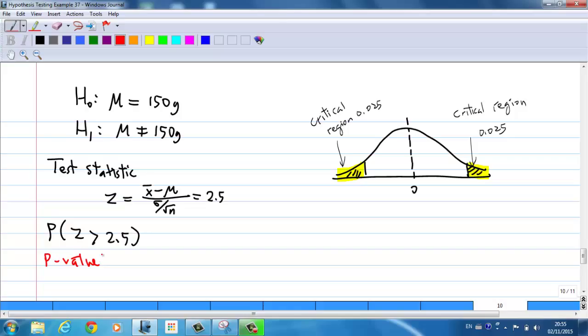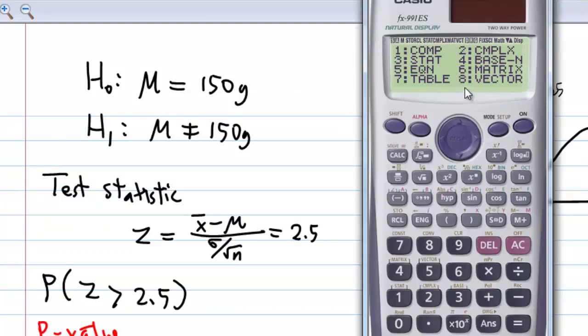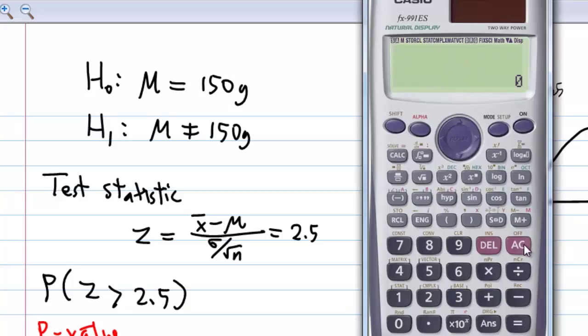In this case, the calculator function is r. Set the calculator mode to statistic, which is 3. Then press AC to get out, press shift 1 for statistics, select 7 for distribution, and now 3 for r and enter 2.5. So r 2.5 is the area to the right of 2.5.